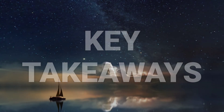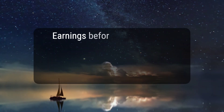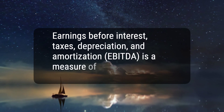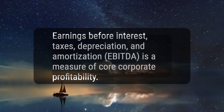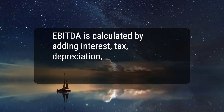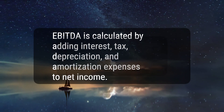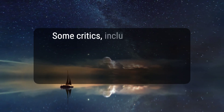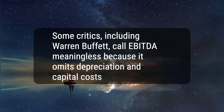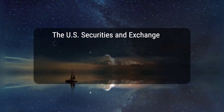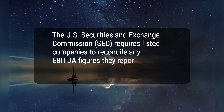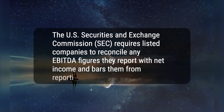Here are four key takeaways. 1. Earnings Before Interest, Taxes, Depreciation, and Amortization — EBITDA — is a measure of core corporate profitability. 2. EBITDA is calculated by adding interest, tax, depreciation, and amortization expenses to net income. 3. Some critics, including Warren Buffett, call EBITDA meaningless because it omits depreciation and capital costs. 4. The U.S. Securities and Exchange Commission (SEC) requires listed companies to reconcile any EBITDA figures they report with net income and bars them from reporting EBITDA per share.